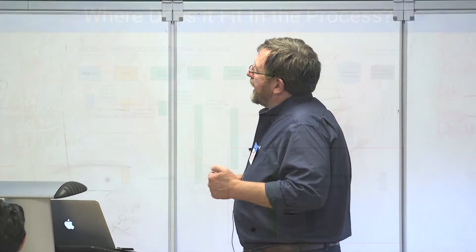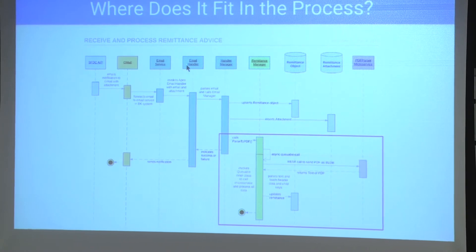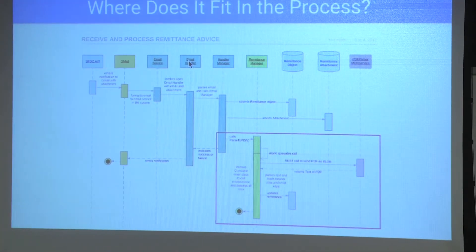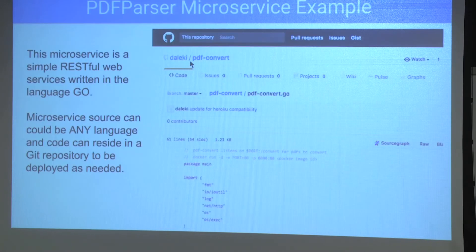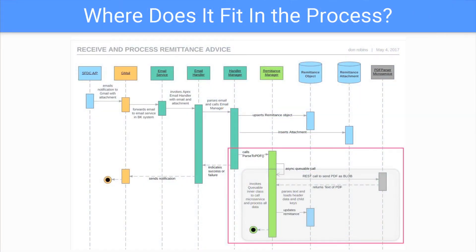Where does it fit in the process? This is a sequence diagram of my process. Basically, this is Salesforce — it sends an email to my Gmail account, and Gmail forwards it to an email service which has an email handler. How many people know email services in Salesforce? Basically, you can consume an email in Salesforce using an email handler, and what that does is it parses the email, creates a record — that's what that first arrow is — creates a remittance record, and then it parses the attachments. Apex can do this very easily. It takes the PDF and creates a child attachment, but that's all it can do.